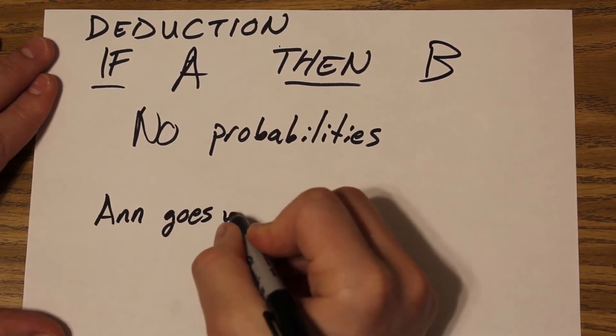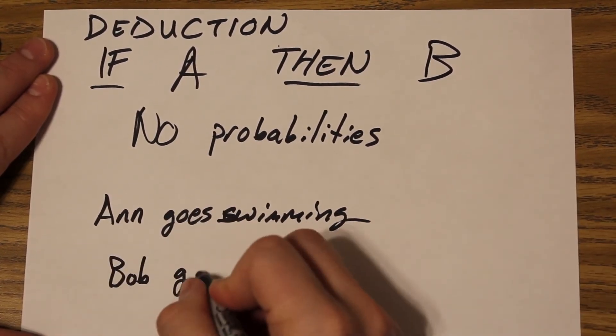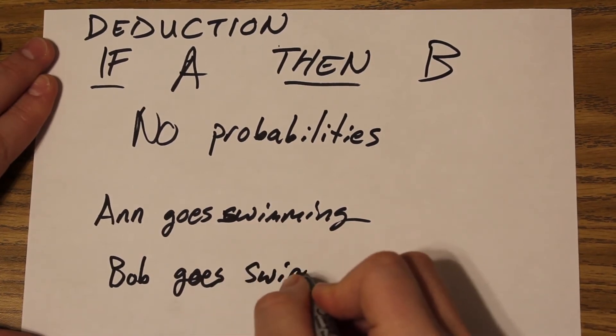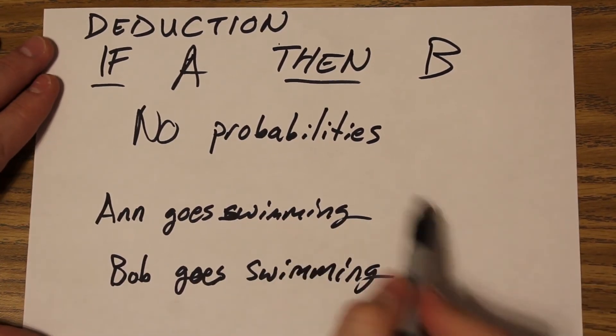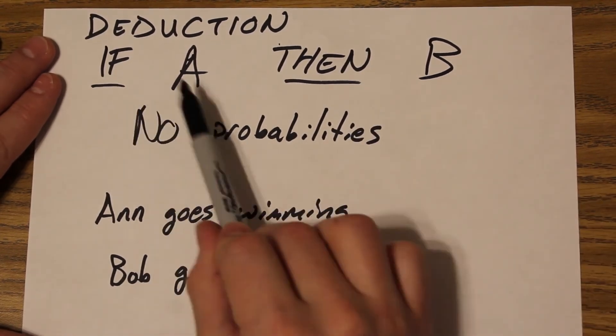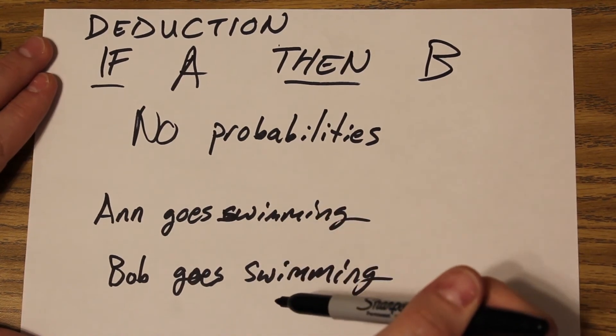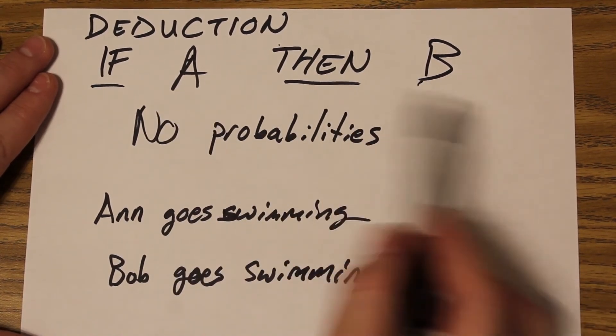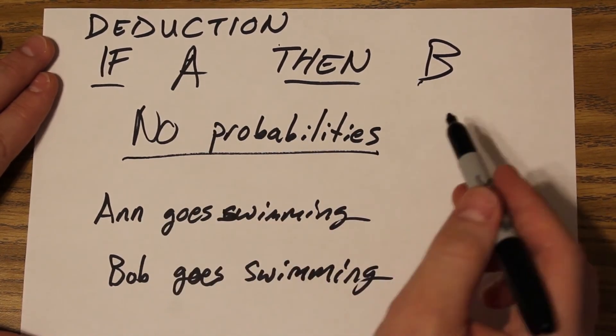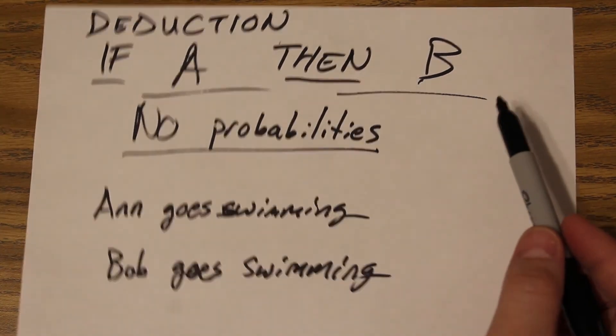So for example, if A is Ann goes swimming, and B is Bob goes swimming, then if Ann goes swimming, absolutely, then Bob goes swimming, absolutely. That's a deductive statement. There's no uncertainty. There's never a case where Ann goes swimming, but then Bob doesn't. That's not even possible because of this A, B certainty. If, then.